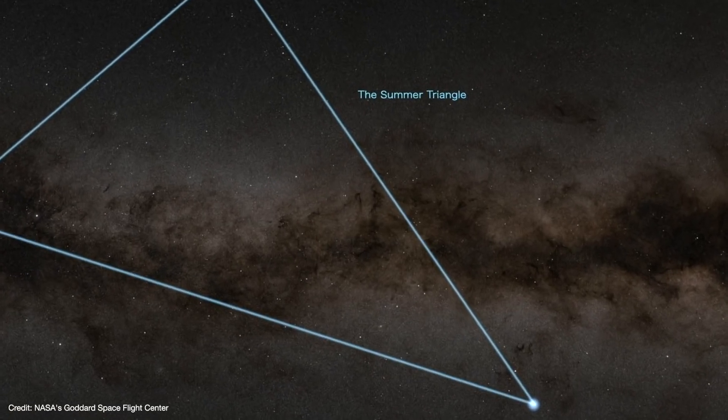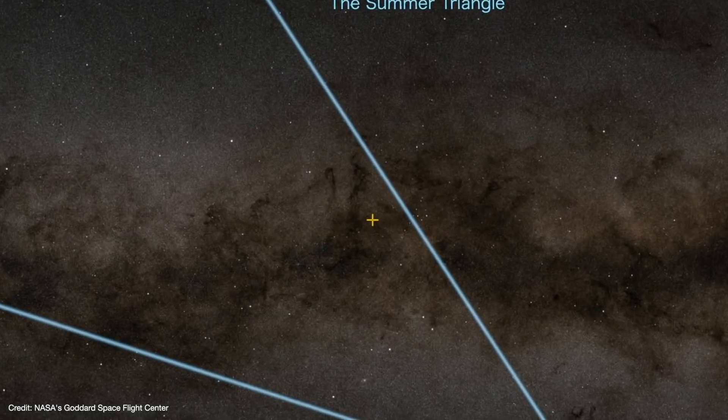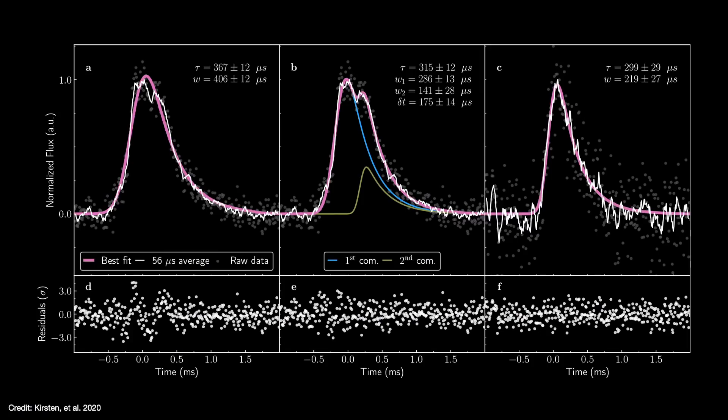In April 2020, a magnetar in our galaxy unleashed a powerful burst of x-rays and radio energy. This was our first detection of an FRB right here in our cosmic backyard. We'll talk about what FRBs are and why this observation is so important.